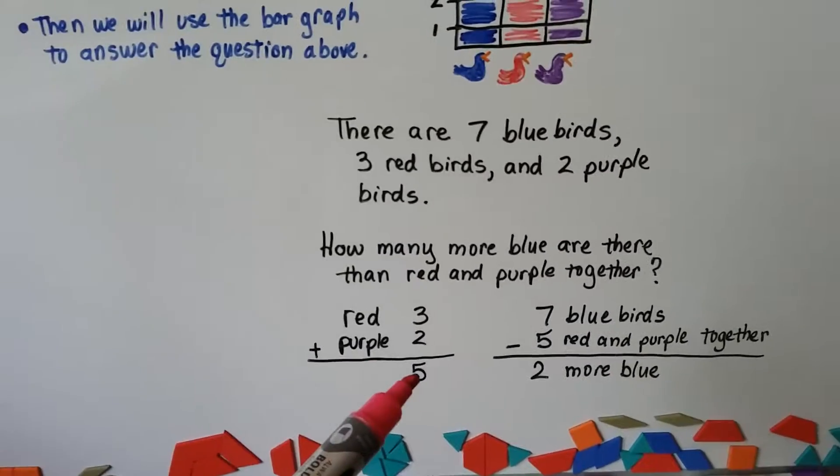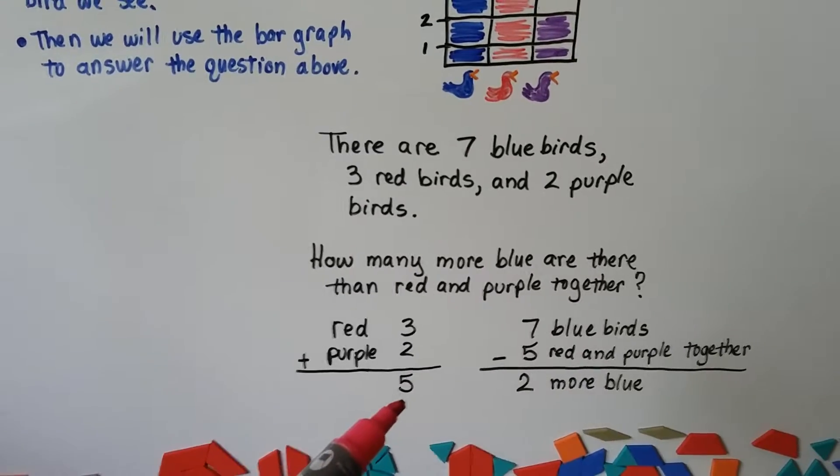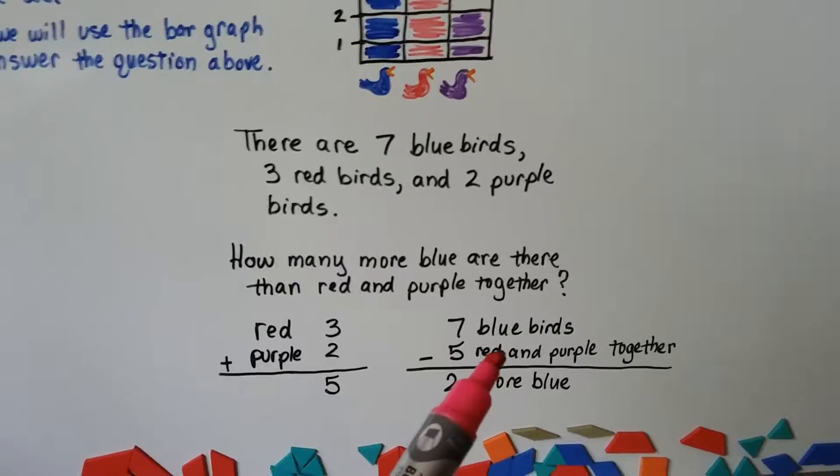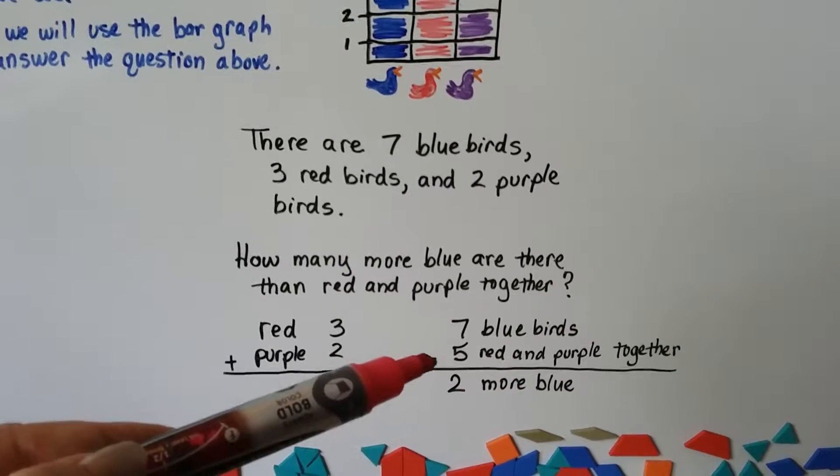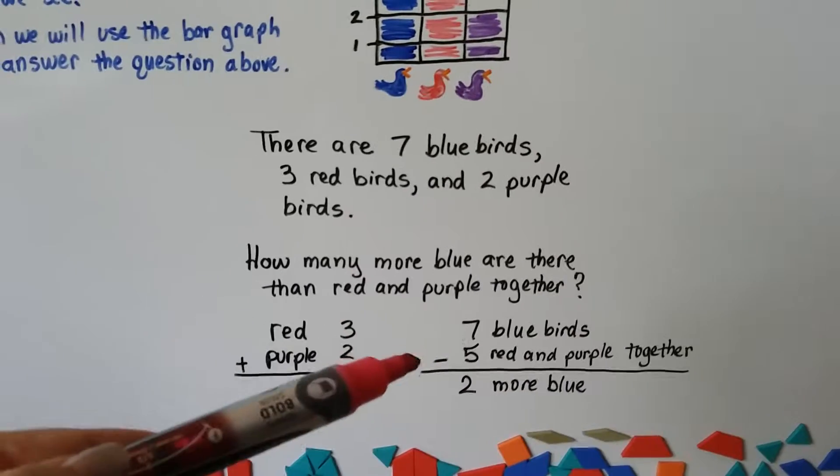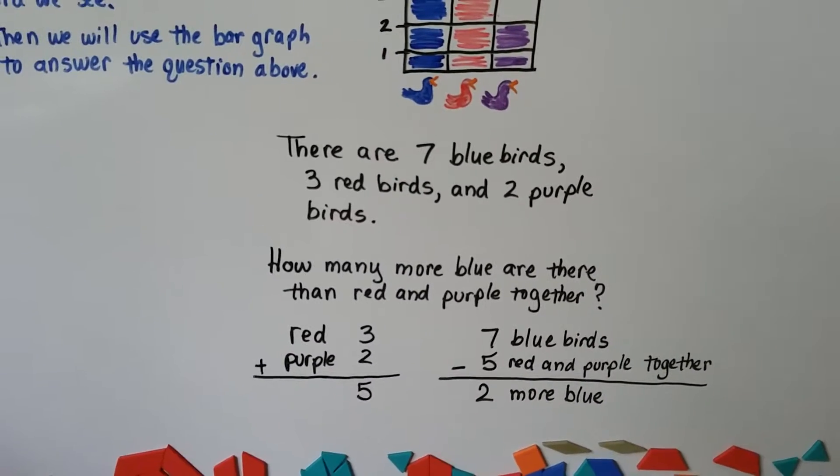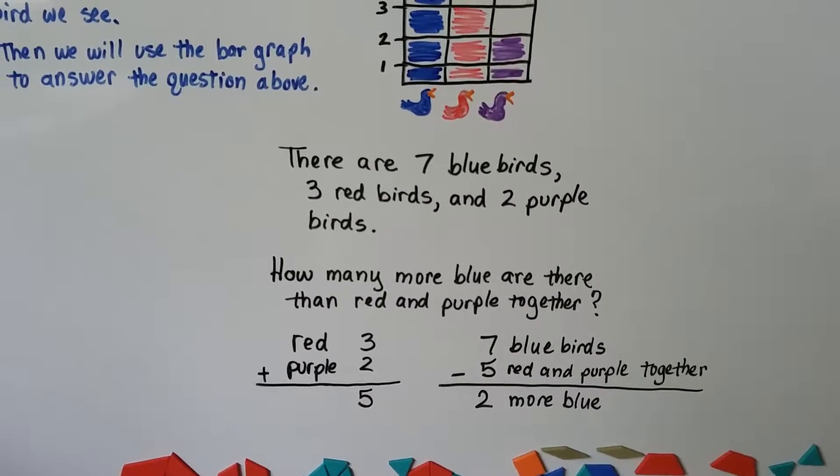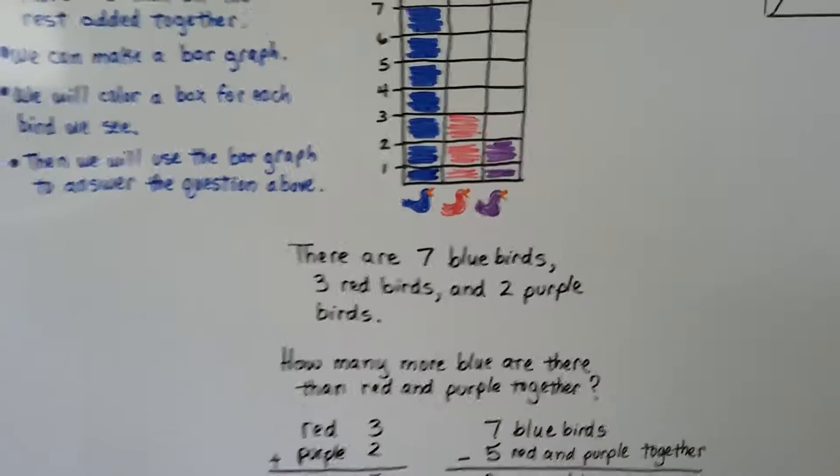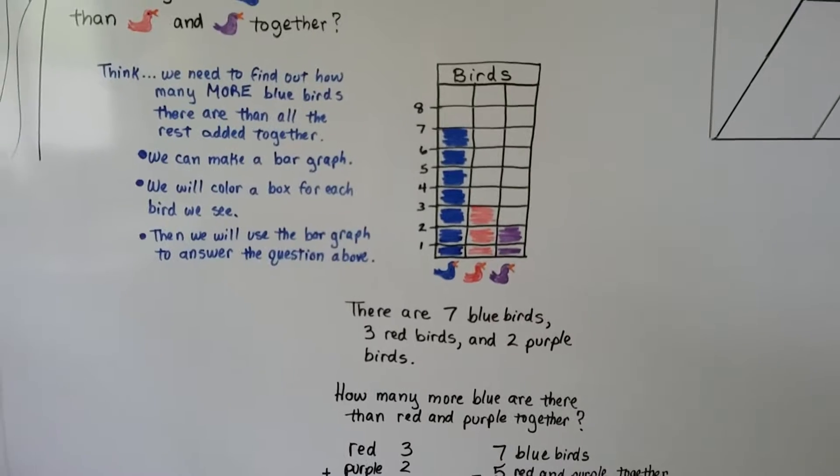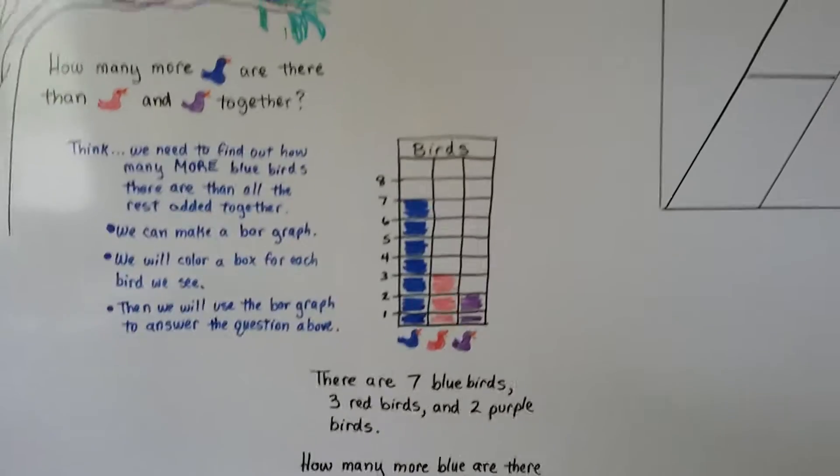Three red and two purple makes five birds. So if there's seven blue birds and there's five red and purple together, we can find the difference and do seven minus five. That means there's two more blue ones than there are red and purple ones together. Okay? And see how the bar graph can help us? And we can see there's a lot more blue birds. Right?